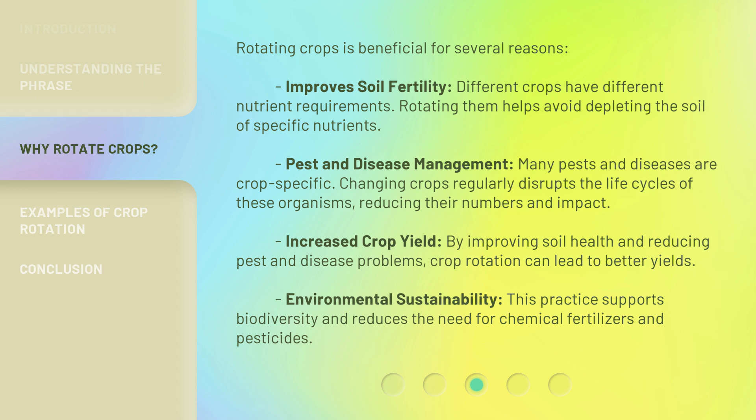Third, increased crop yield: by improving soil health and reducing pest and disease problems, crop rotation can lead to better yields. Fourth, environmental sustainability: this practice supports biodiversity and reduces the need for chemical fertilizers and pesticides.